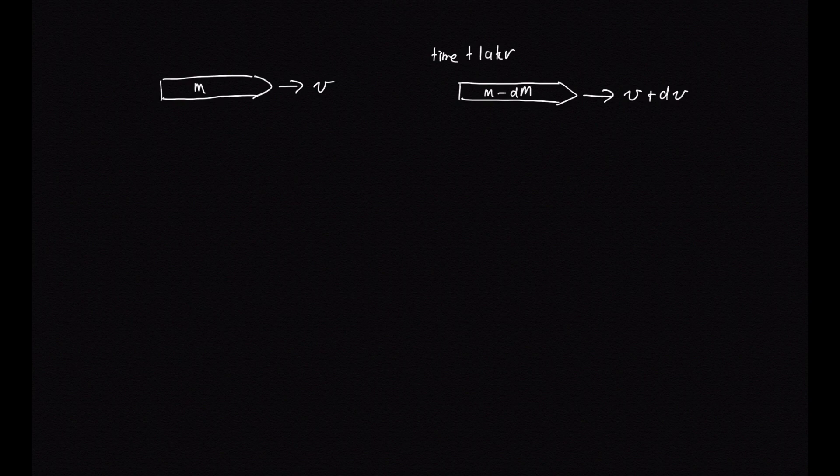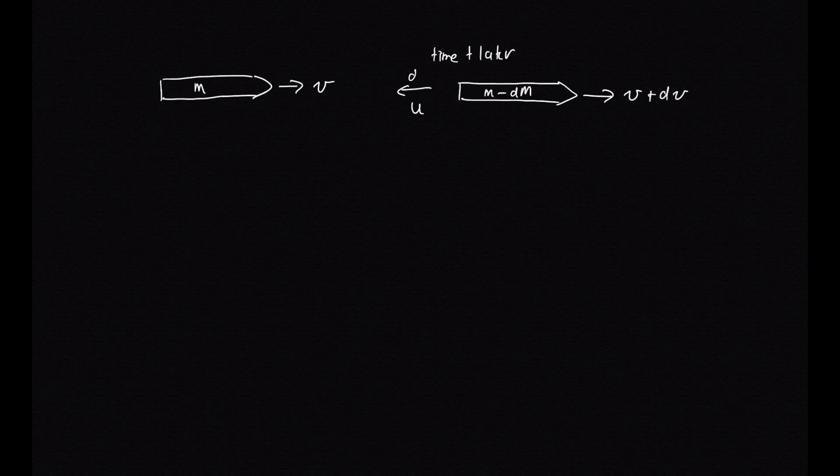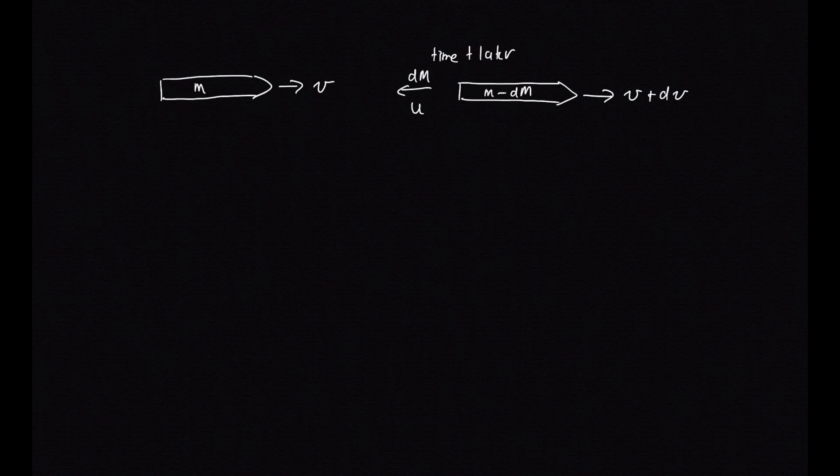But that mass hasn't just disappeared into thin air. We've got fuel going back this way with speed u and it's got mass dm. So that's where the missing mass has gone to.